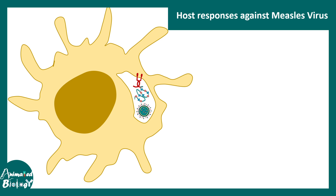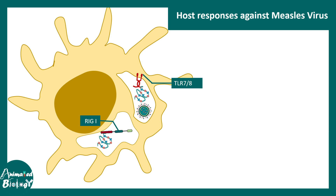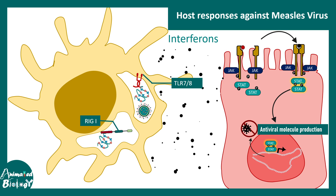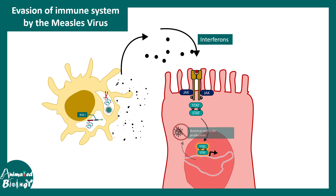The host can also recognize measles virus. Dendritic cells have pattern recognition receptors — Toll-like receptors 7 and 8 and RIG-I-type receptors — that detect the viral RNA. Upon recognition, they secrete interferon, which signals nearby cells of infection, activating the JAK-STAT pathway. STAT-mediated activation leads to production of antiviral molecules that prevent viral assembly in new cells. However, the virus counteracts this: viral P and V proteins suppress STAT activation, thereby impairing interferon production and evading the host defense machinery.